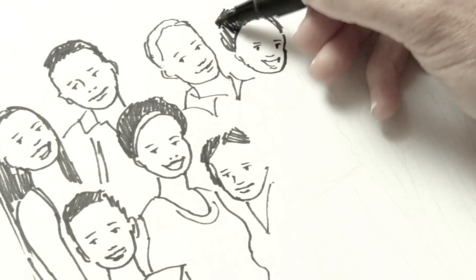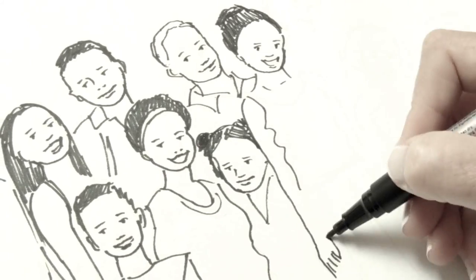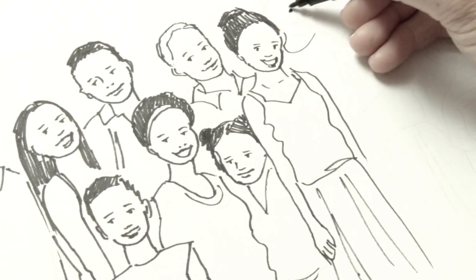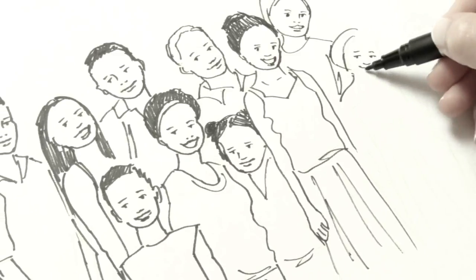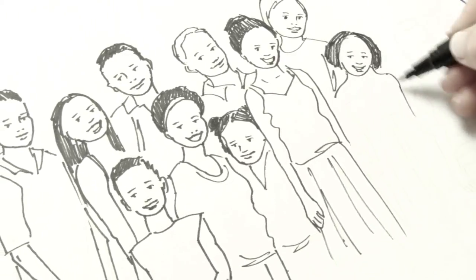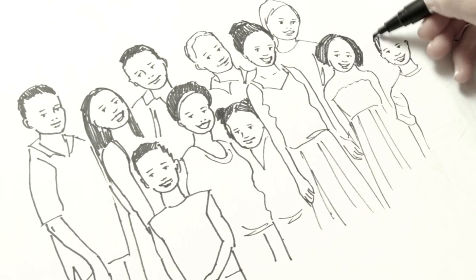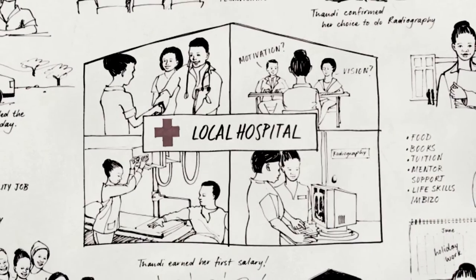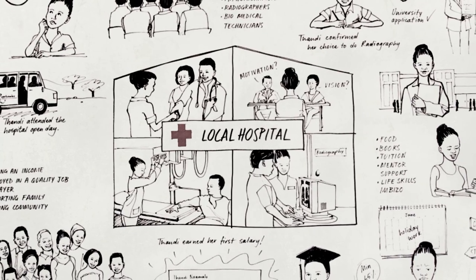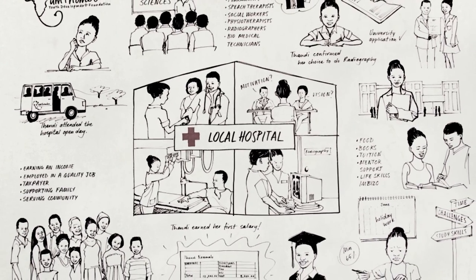In addition, this model gives Tandi and other youth an opportunity for a better life, but also benefits their community as they work as healthcare professionals in their community for at least the same number of years they were supported for. This model could be replicated to other rural provinces in order to have an even greater impact.